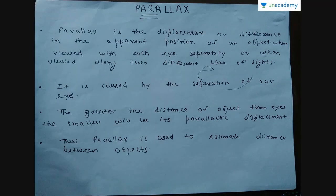Let us now discuss another concept known as parallax. Parallax is the displacement or difference in the apparent position of an object when viewed with each eye separately, or when viewed along two different lines of sight.